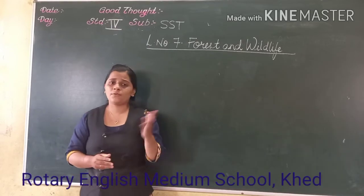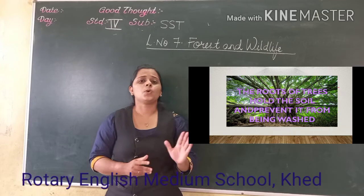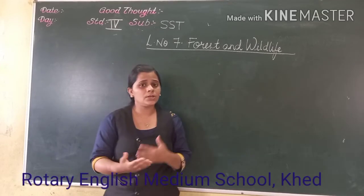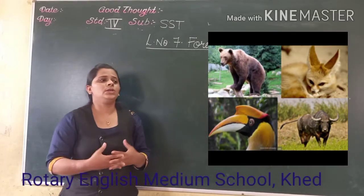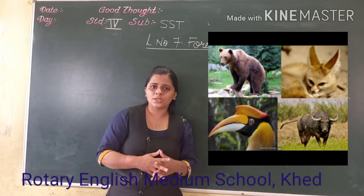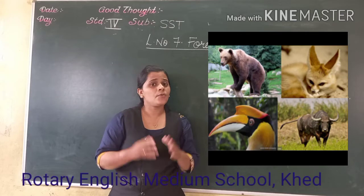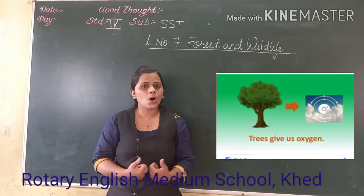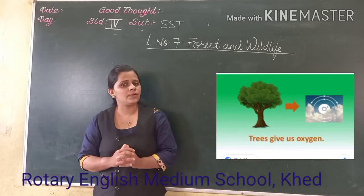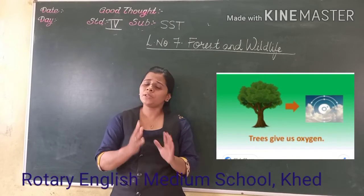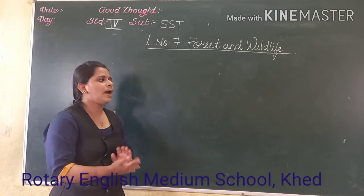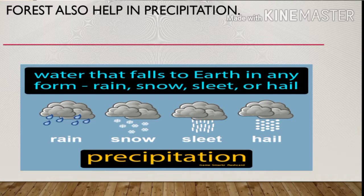We discussed that forests protect us from soil erosion. Forests are also a home to wild animals — the forest provides them shelter. We also learnt that trees give us oxygen, which is very important for our life. Further, forests also help with precipitation, meaning rainfall and snowfall on the earth.